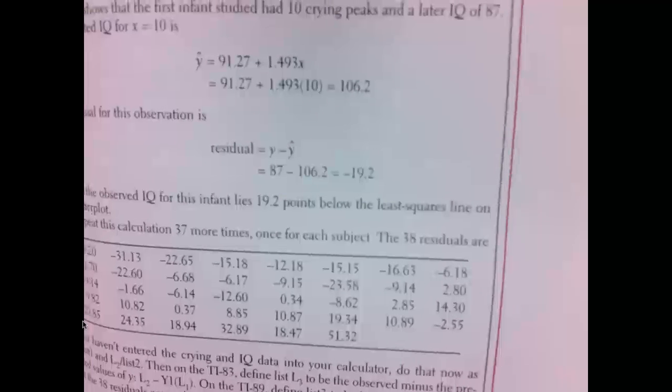As you recall, this problem dealt with popping babies on the foot with a rubber band and seeing how much they cried. Part A says the residuals for crying and IQ data appear in example 14.3 on page 785. So flipping back to page 785, you can see that they have calculated all of the residuals for the baby crying data. I'm going to use my calculator to calculate those residuals and we'll take a look at it soon.